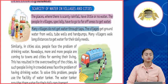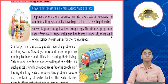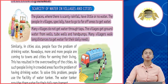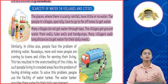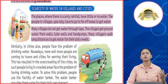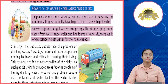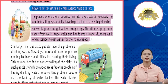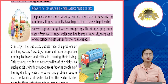Many villages do not get water through taps. The villages get groundwater from wells, tube wells and hand pumps. Many villagers walk long distances to get water for their daily needs. Toh alag-alag villages mein paani nikalne ke alag-alag tariqe hote hain — jaise ki ground water, rain, lakes, ponds. Ground water nikalne ke bhi alag-alag tariqe hote hain jaise ki tube wells aur pipes.